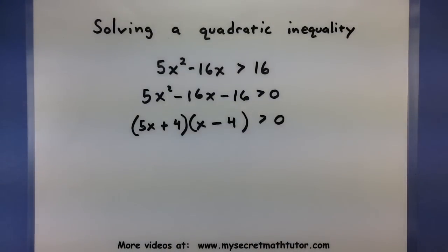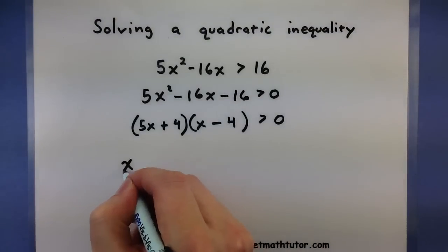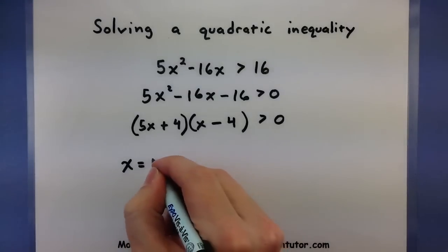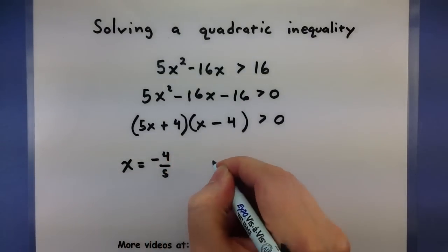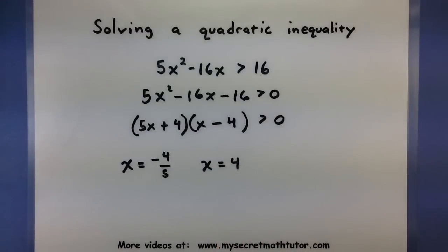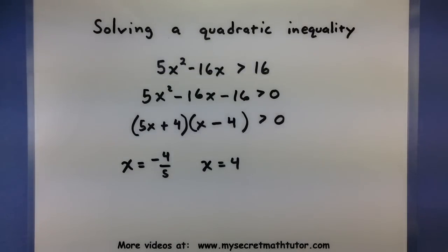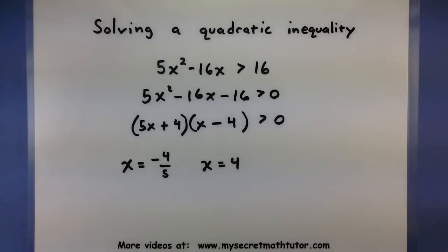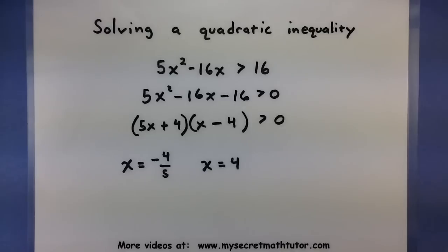I'm factoring this so that I can tell it will equal zero when x is equal to negative 4/5 and when x is equal to 4. Now be careful — don't stop there, because that is not necessarily our solution. That is just where this quadratic would be equal to zero. The solution will be ranges of values for an inequality.